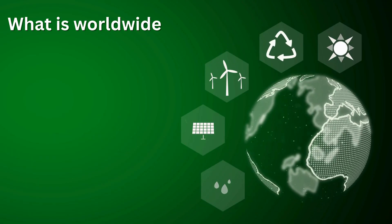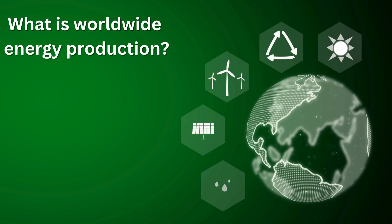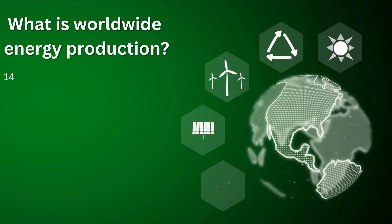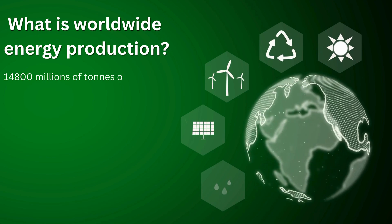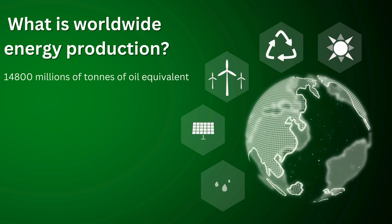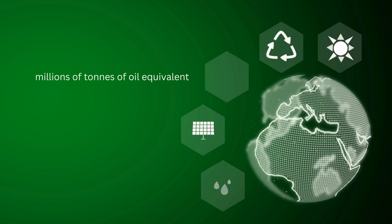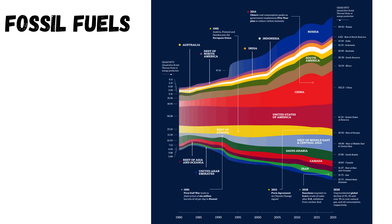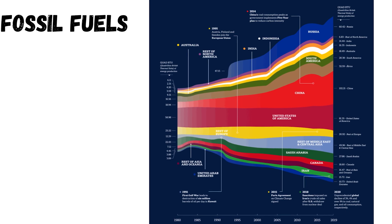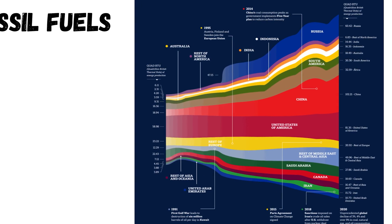What is Worldwide Energy Production? In 2021, world total energy production was 14,800 millions of tons of oil equivalent. Regarding fossil fuels, while the US is a dominant player in both oil and natural gas production, China holds the top spot as the world's largest fossil fuel producer, largely because of its significant production and consumption of coal. Over the last decade, China has used more coal than the rest of the world combined.